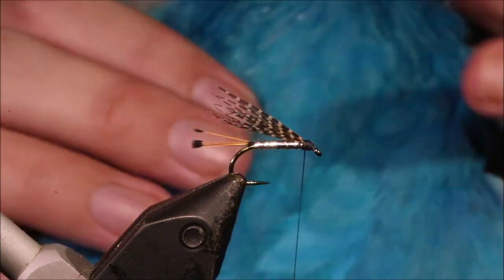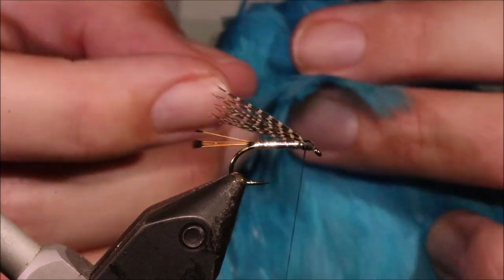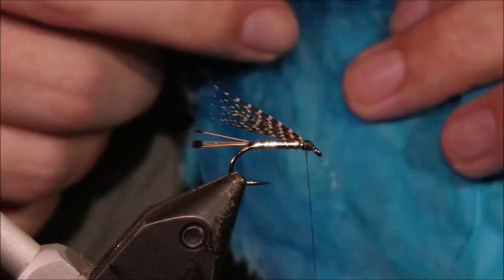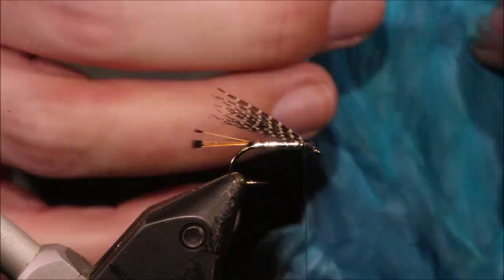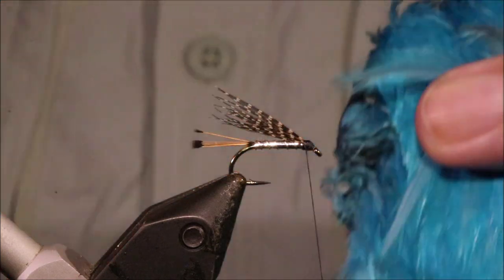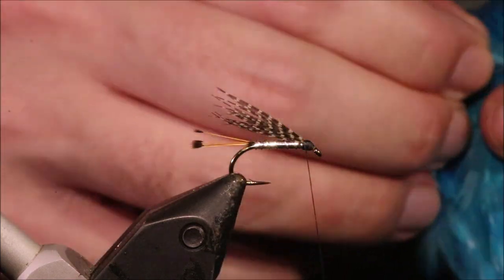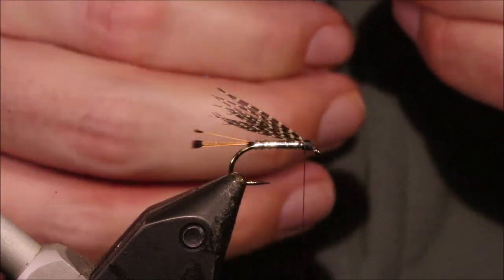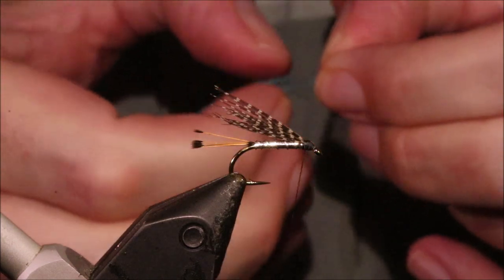And then, a teal blue hackle. I mean you could use kingfisher blue. Too big. I'm just using, this is just an Indian hen neck that I've got here. I'm just checking the length of the hackle barbs. That looks no bad. And then I'll tie it in by the tip.